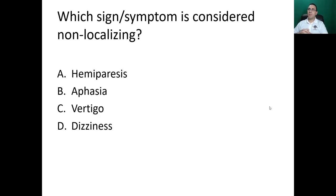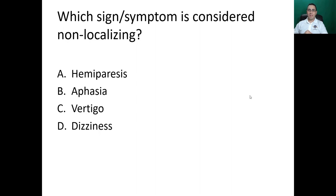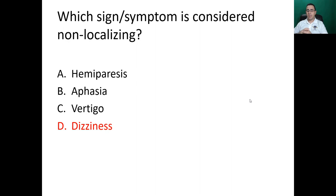Next question: which sign or symptom is considered non-localizing? Options: hemiparesis, aphasia, vertigo, and dizziness. The answer is D: dizziness. Hemiparesis is related to the anterior circulation, aphasia is related to the anterior circulation, and vertigo is related to the posterior circulation. Dizziness, headaches, confusion, and syncope are all non-localizing signs and symptoms.